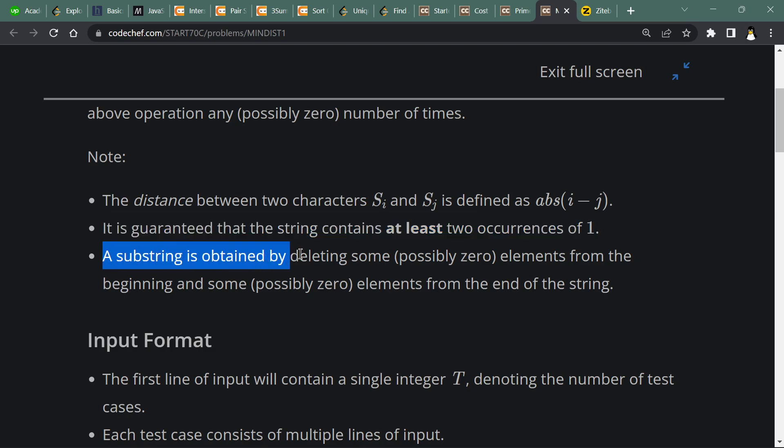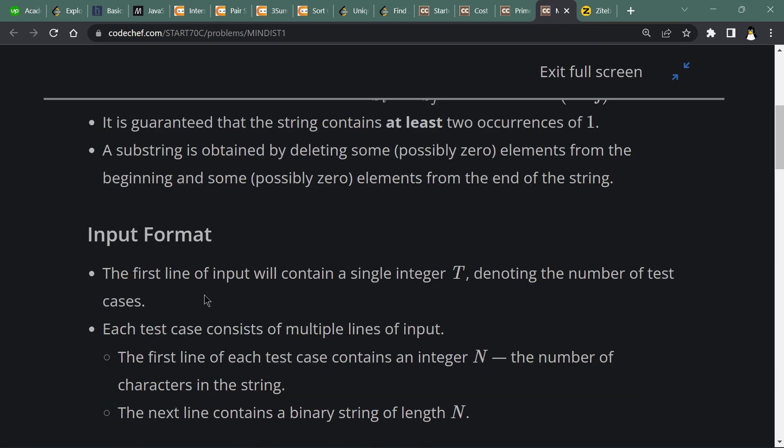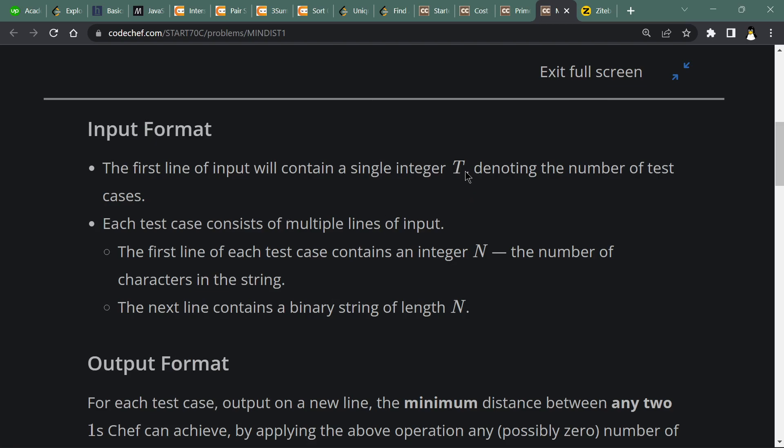A substring is obtained by deleting some possibly zero elements from the beginning and some possibly zero elements from the end of the string. The input format is first T, which is number of test cases, and each case consists of N, which is number of characters in the string, followed by a binary string of size N.